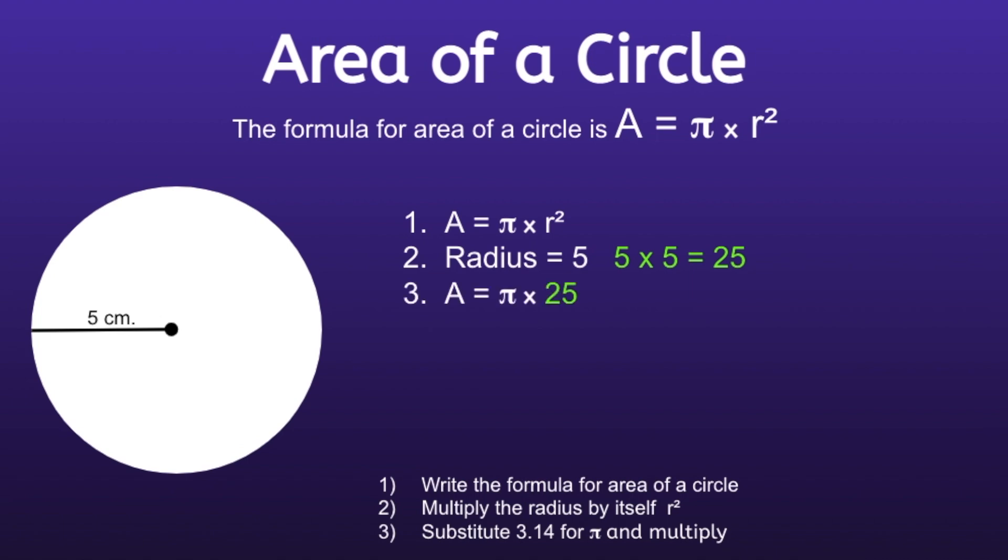Step three. Substitute 3.14 for pi and multiply. So in the formula, instead of the pi symbol, we are going to replace that with the number 3.14. 3.14 times 25 is equal to 78.5. So the area of this circle would be 78.5 centimeters squared.